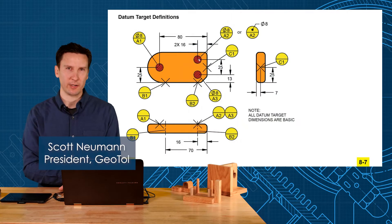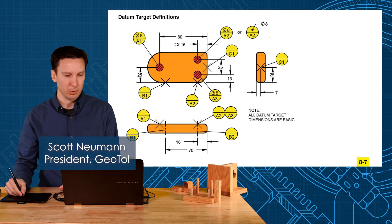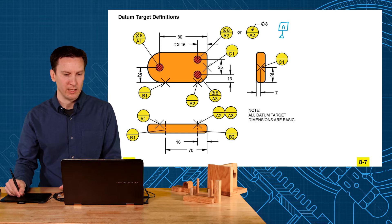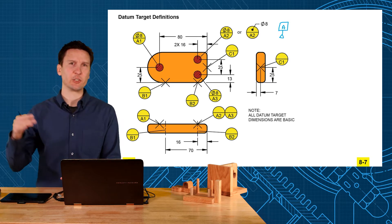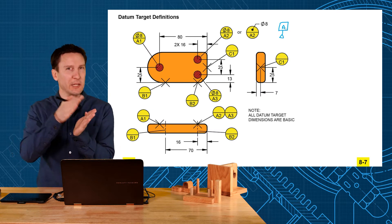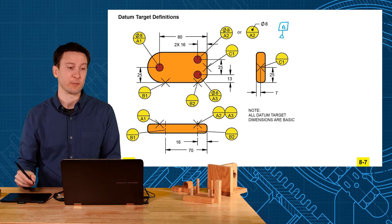This video will introduce datum targets. This symbol is used in place of a datum feature symbol to establish a datum reference frame. It's used on parts that have a lot of variation on them - plastic parts, sheet metal, castings, things that you can't get a repeatable datum by making contact with the entire surface.